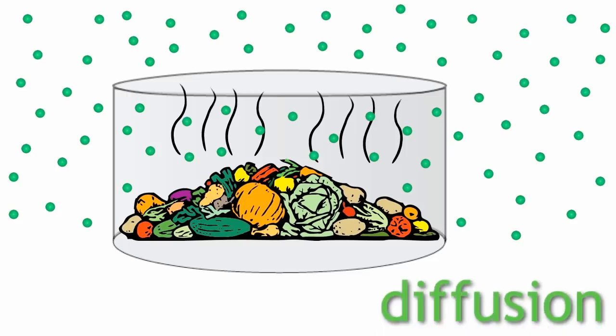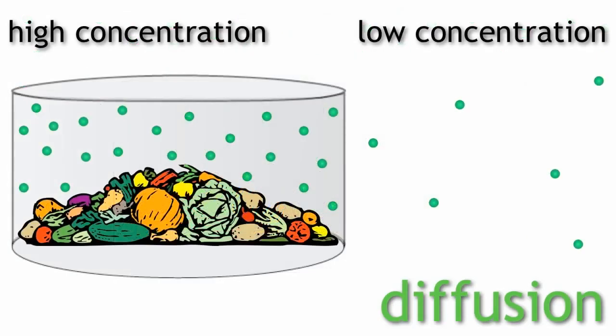Diffusion is the random movement of one gas through another from a region of high concentration, in this case inside the box, to a region of low concentration, in this case outside the box.